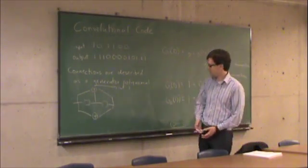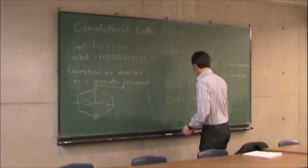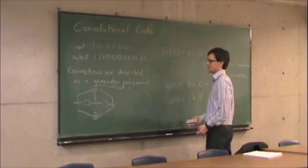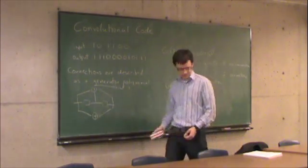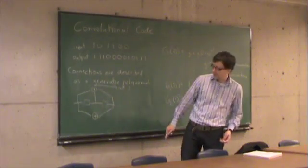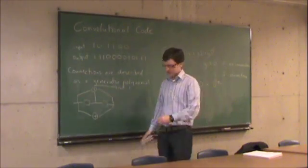Since this is a finite state machine, the generator polynomial description fully captures the encoder structure.